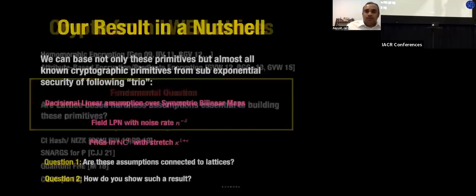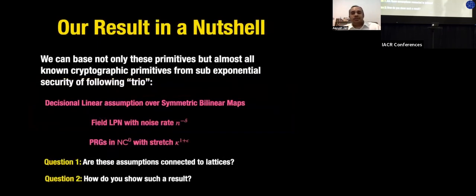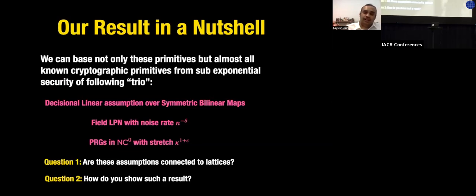What we show is a really interesting result: you can build not only FHE but most of the applications from the previous slide, relying on a mix of three assumptions — a trio. The first is the Decision Linear assumption over symmetric bilinear maps (DLIN). The second is Learning Parity with Noise (LPN) over fields with error probability l^{-δ}, where δ can be an arbitrarily small positive constant — so just barely sub-constant noise.